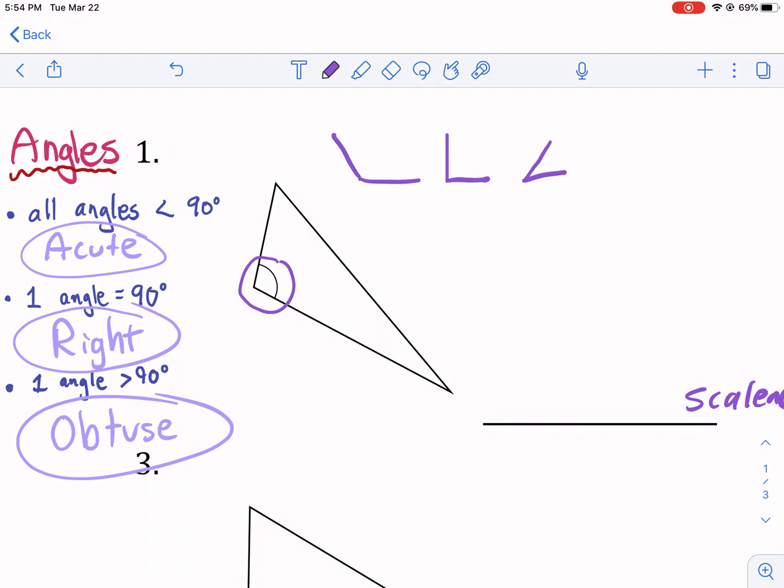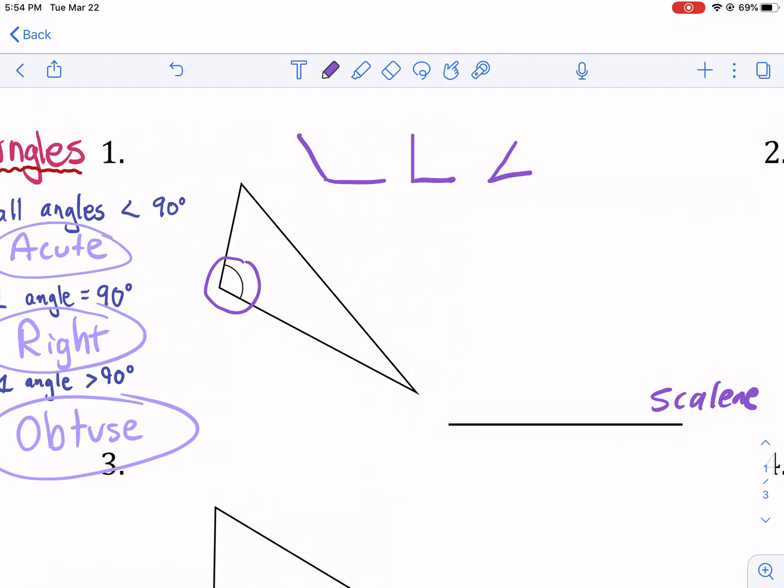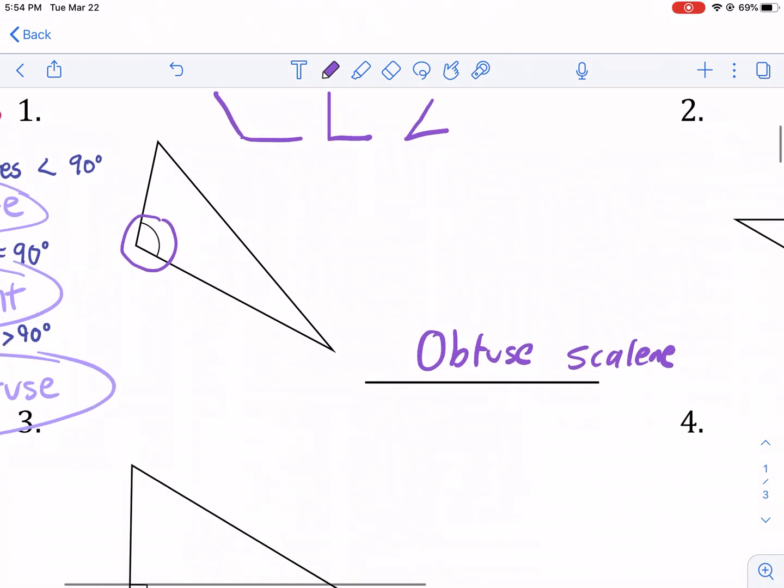They got a little bit more sloppy as it went along, but obtuse, that's definitely above 90 degrees. So this is an obtuse scalene triangle. We'll just call it obtuse scalene.